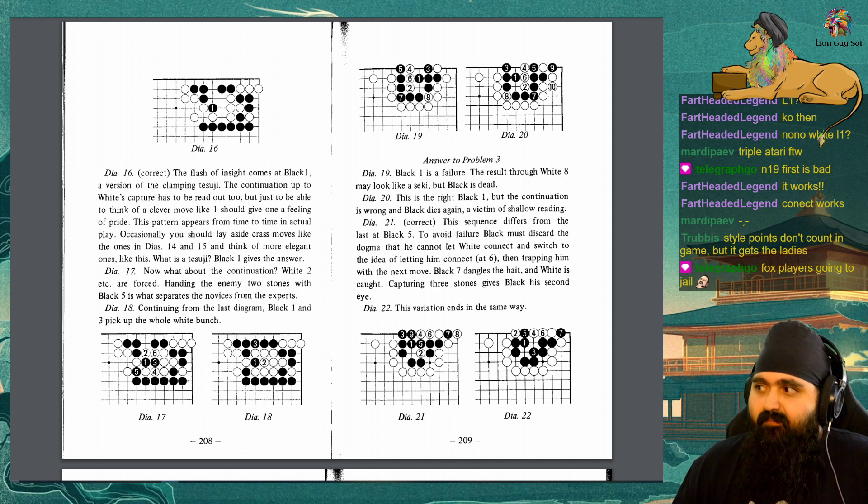Answer to problem 3, Diagram 19: Black 1 is a failure. The result through white 8 may look like seki, but black is dead. Diagram 20: This is the right black 1, but the continuation is wrong and black dies again. A victim of shallow reading. Diagram 21: Correct. This sequence differs from the last at black 5. To avoid failure, black must discard the dogma that he cannot let white connect and switch to the idea of letting him connect at 6, then trapping him with the next move. Black 7 dangles the bait and white is caught. Capturing 3 stones gives black his second eye. Diagram 22: This variation ends the same way.